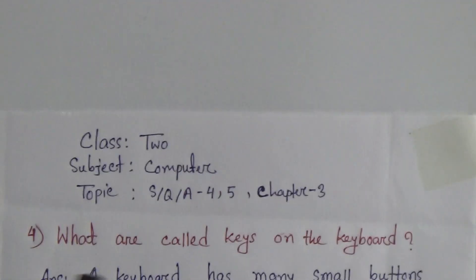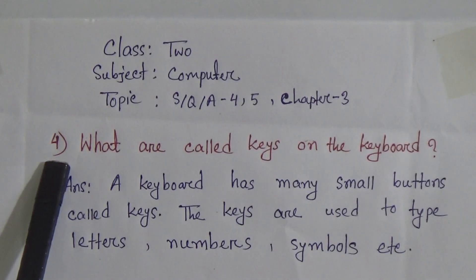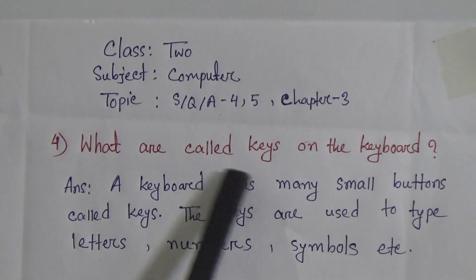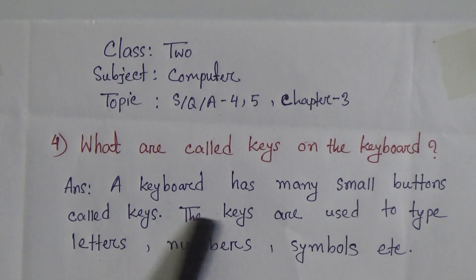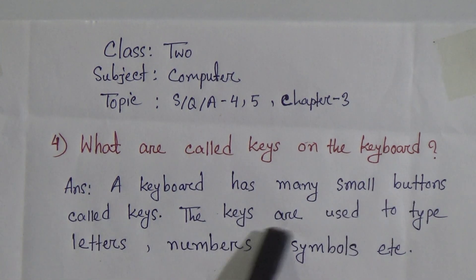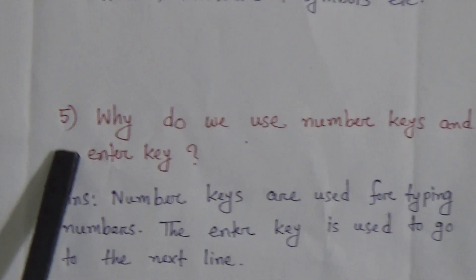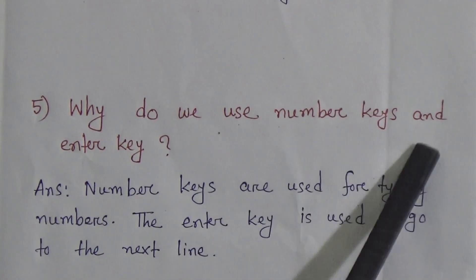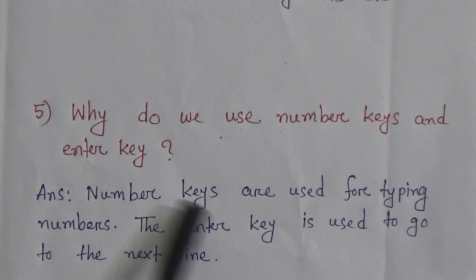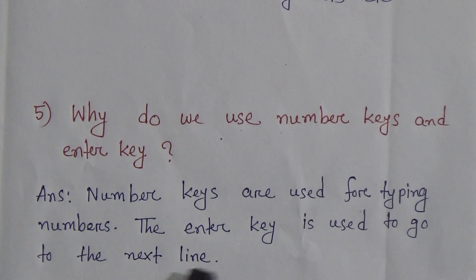Again, I am going to read this topic once more. Question 4: what are called keys on the keyboard? Answer: a keyboard has many small buttons called keys. The keys are used to type letters, numbers, symbols, etc. Question 5: why do we use number keys and enter key? Answer: number keys are used for typing numbers. The enter key is used to go to the next line.